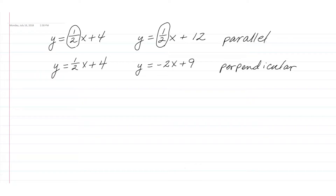So parallel lines have the same slope, and perpendicular lines have negative reciprocal slopes.